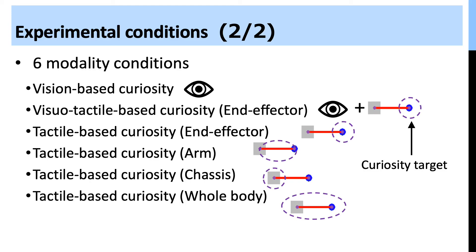We conduct 6 modality conditions. To observe the effect of tactile-based curiosity, we include a control experiment using only vision-based curiosity. To compare among tactile-based curiosity conditions, we prepare 4 curiosity conditions targeting the end effector, the arm, the chassis, and the whole body.